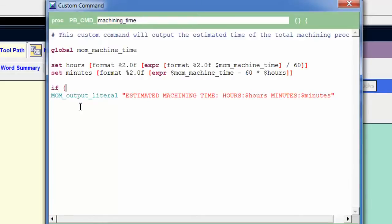If left curly brace, let's check on the variable hours. If hours greater than zero, right curly brace to close the if portion of the statement. Left curly brace to open the next portion. We will output mom output literal, estimated machining time, hours, minutes.